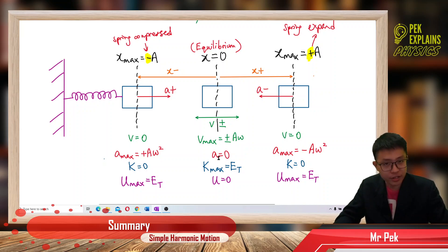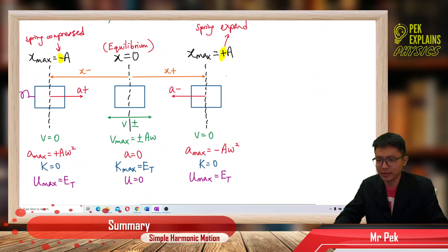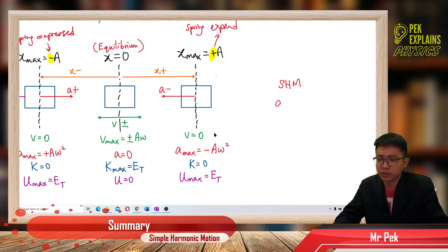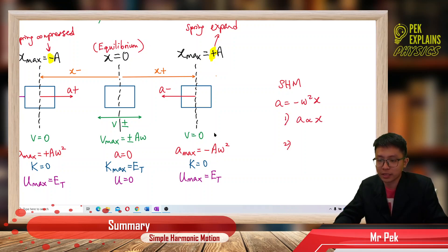Acceleration is zero at the equilibrium. Remember the equation of simple harmonic motion: a = −ω²x. So acceleration is proportional to displacement x, and acceleration is in the opposite direction to x.